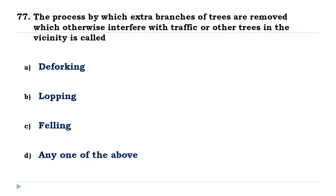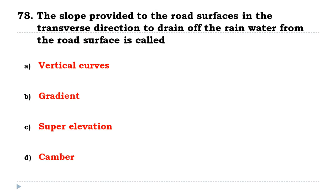The process by which extra branches of trees are removed which otherwise interfere with traffic or other trees in the vicinity is known as lopping. The slope provided to the road surface in the transverse direction to drain off the rainwater from the road surface is called the camber.